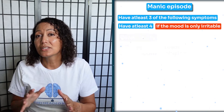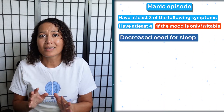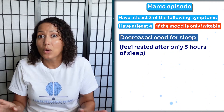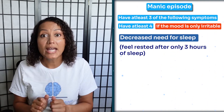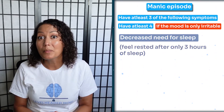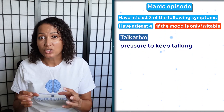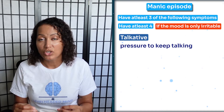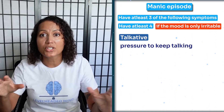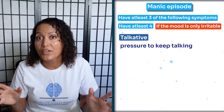The next symptom is a decreased need for sleep. They're only getting like three to four hours of sleep at best and they don't even miss it — they feel very energized, like they're on top of the world. They may also be very talkative, or have what's called pressured speech, where they just keep going on and on, butting into conversations and talking very, very fast.